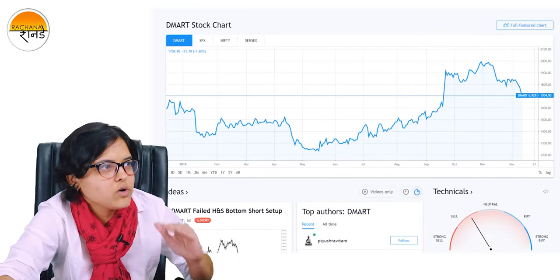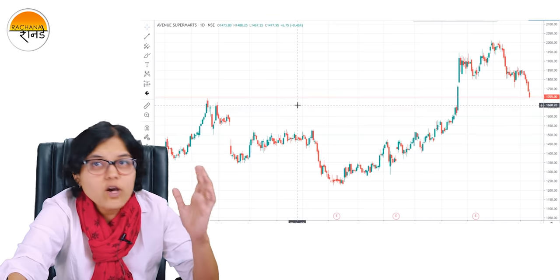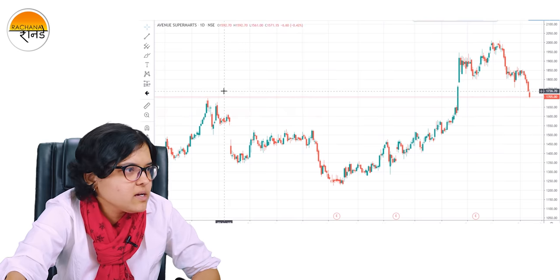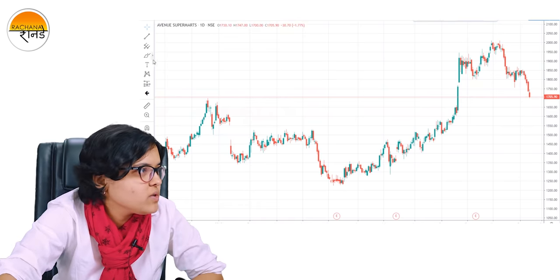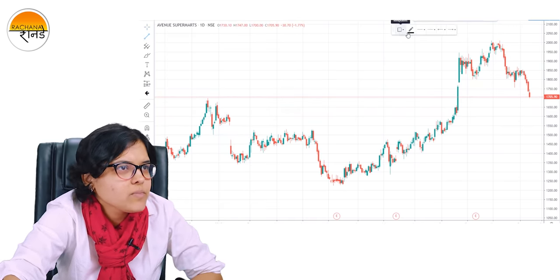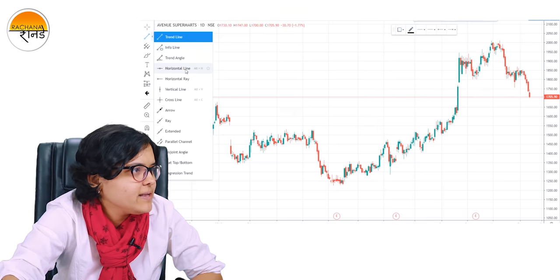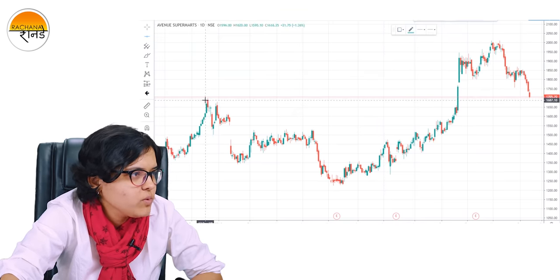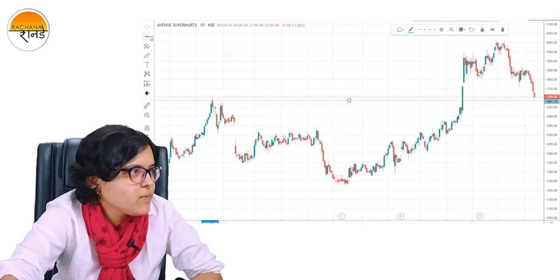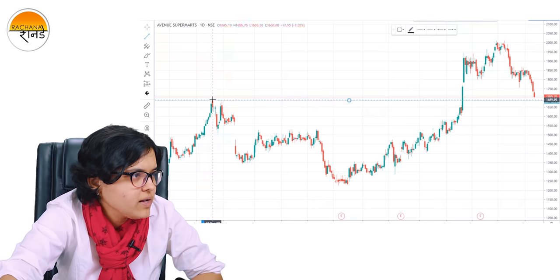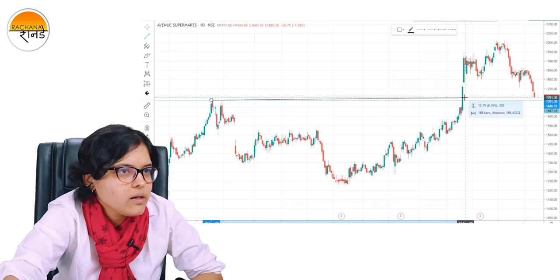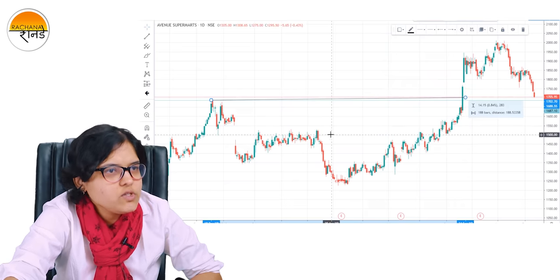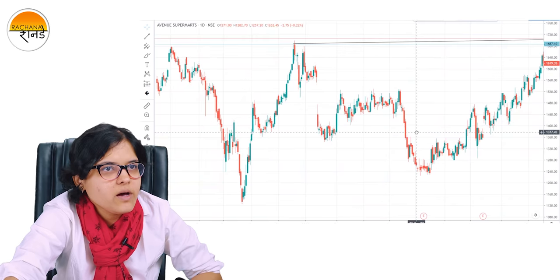This is in.tradingview.com. I've opened the chart of DMART right now. So if you go to the full featured chart, that's how it loads. Here we are on in.tradingview. Now what is to be done is we are going to draw a resistance level first. That's how it's very easy. What was our thumb rule? Try to touch the maximum number of candles. Assume that we are on this day, we are at this level right now.